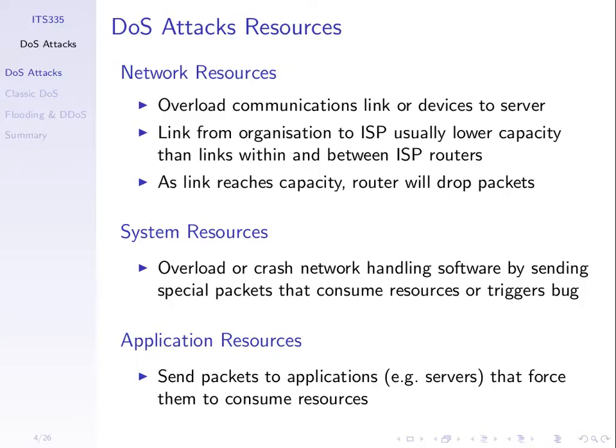Think about accessing the Amazon website. There's a set of links between your computer and the Amazon web server in the US. Of those links, which one has the lowest capacity — the lowest data rate? From your computer to the first router, then that router to the next one via many ISPs across Asia and into the US, and then a link into the Amazon web server. Which link is the slowest?